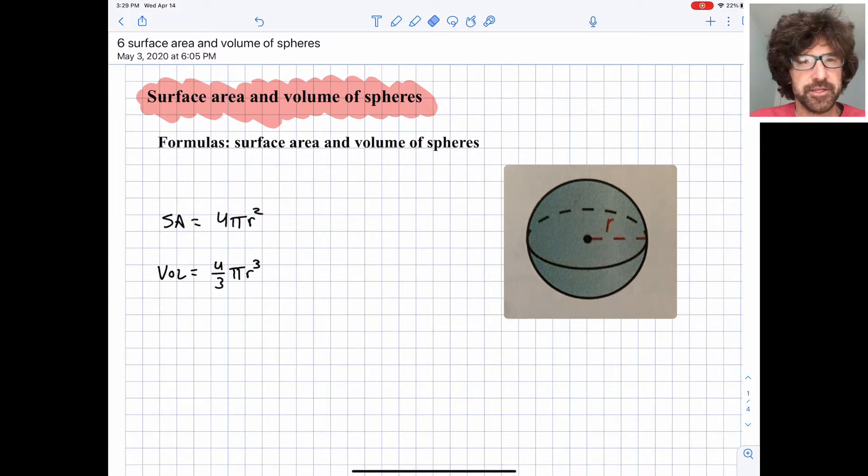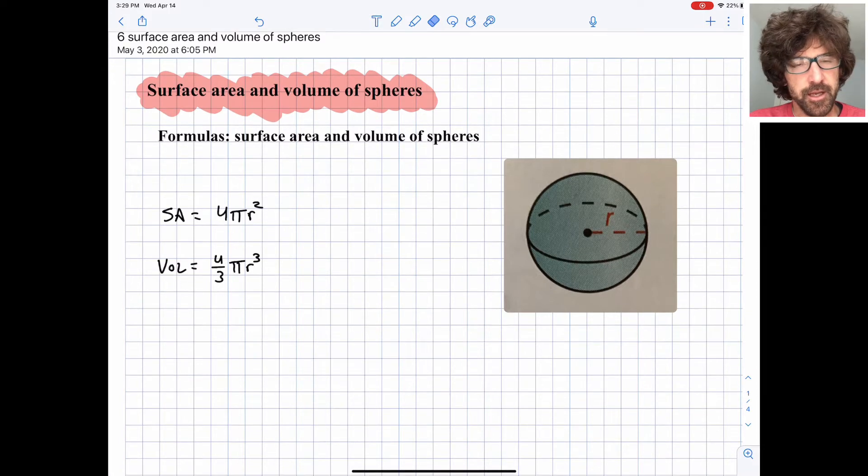So those are the two formulas. You just got to memorize them: 4πr² and 4/3πr³. By the way, if you ever see a formula that just has a squared in it, you're probably finding some sort of area. And if it has a cubed in it, you're probably finding some sort of volume. So there's another way to help you remember.